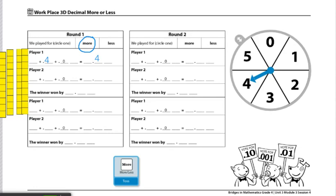Depending on what was rolled in the beginning, in this case we rolled more, the player with the higher score would win the round. But if we were to roll less, the player with the lower score would win the round. Both players will mark the winner of the round on their record sheet.